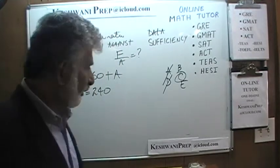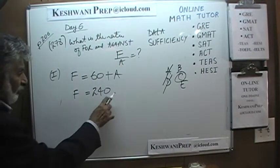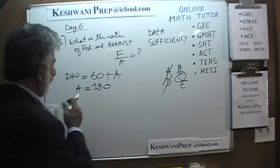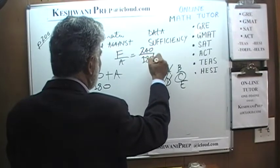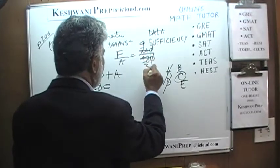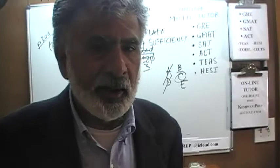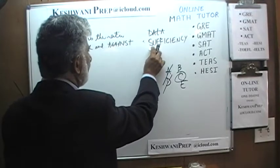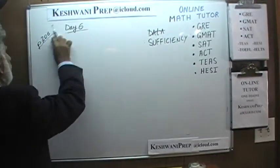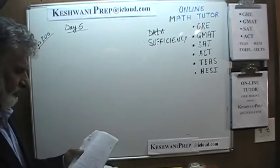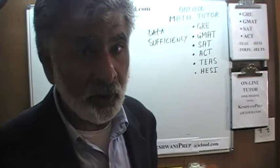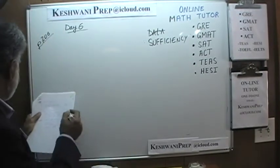Just for learning purposes we can solve it out — don't do this in the real exam. F equals 240, so against must be 180. The ratio is 240 to 180. Divide top and bottom by 60 and the ratio is 4 to 3. For every 4 people who voted in favor, there were 3 votes against. But that was a waste of time in the exam. Do try it at home for practice, but not in the real exam.